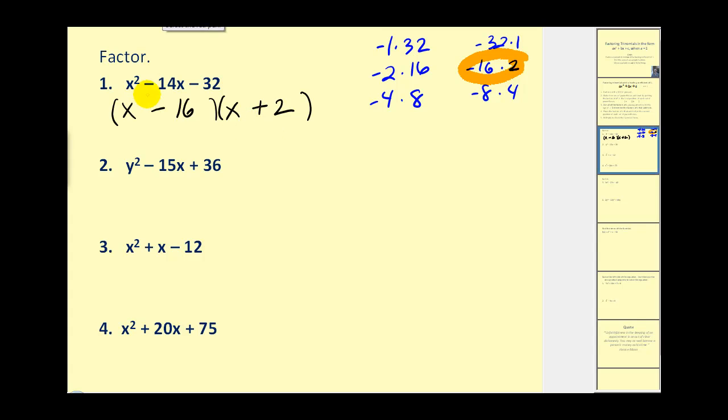For this first one, let's go ahead and check it. We'd have x² + 2x - 16x - 32. So everything checks out fine here. Let's go to the next one. Now if you know your multiplication tables really well, you could probably skip listing all the factors, but for the purpose of this video, I am going to list them every time.